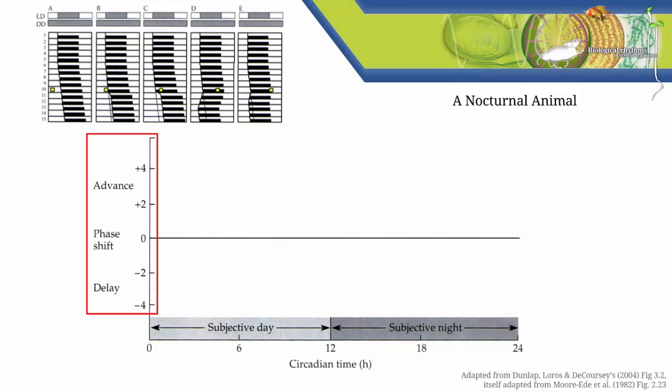Now we're ready to plot our data. First, we plot the results from experiment A. It might be tough to tell from the actogram, but the organism was exposed to the pulse of light right at around CT 6. As you can probably tell from the actogram, there wasn't any effect on the organism's activity. So there wasn't any phase advance, and there wasn't any phase delay. So we plot the data from experiment A at 0 on the y-axis, and at CT 6 on the x-axis.